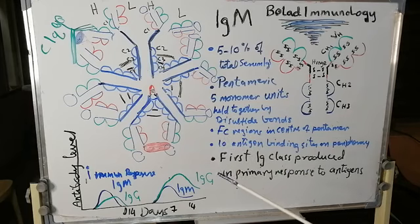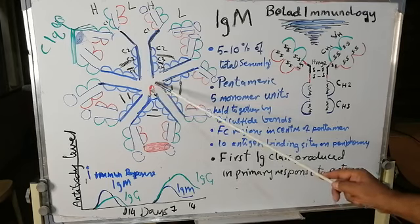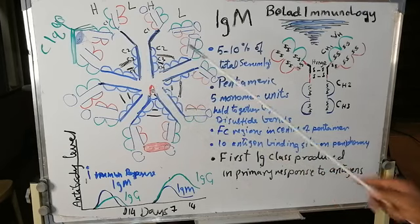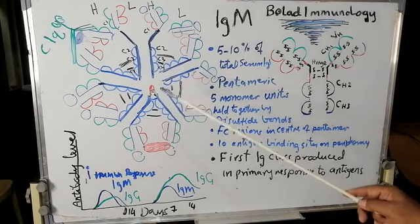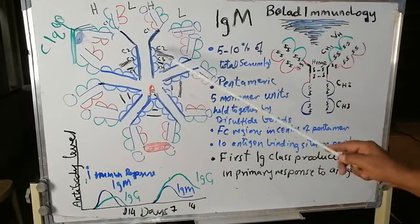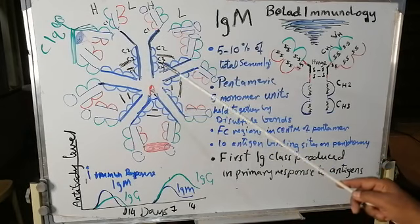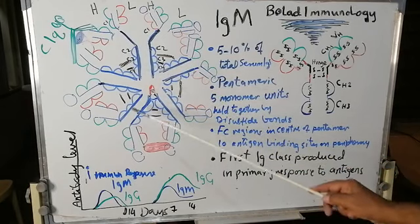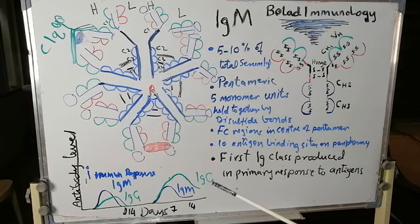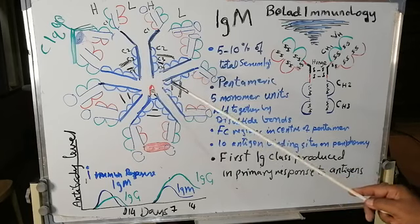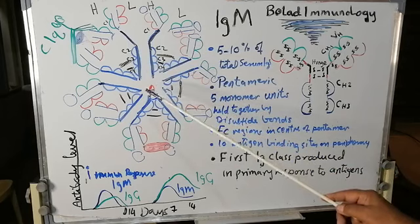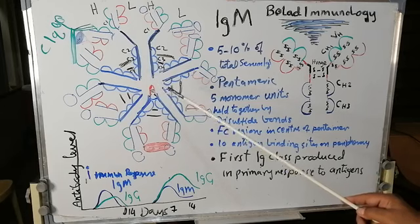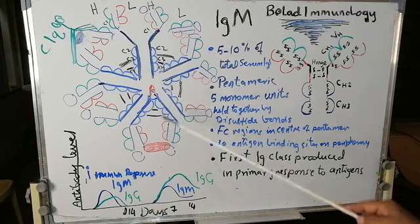Each pentamer contains a joining chain, also called J chain. This joining chain appears to be required for polymerization of the monomers together, and this polymerization is essential for formation of pentameric IgM. This chain also allows IgM to bind to receptors on secretory cells, so it can reach external secretions that pass through mucosal cells.